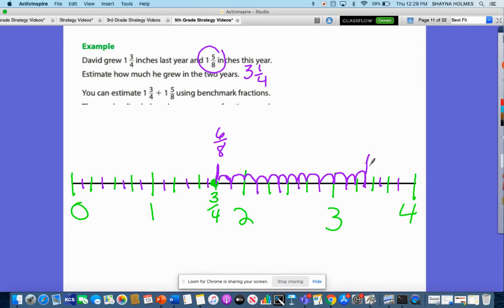Right here would be, this one represents, let me label this, the 1 and 3 fourths, and this represents my 1 and 5 eighths. And it stops right here. So that would be 3 and 1, 2, 3. 3 and 3 eighths.